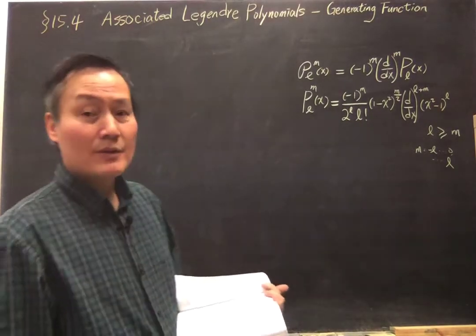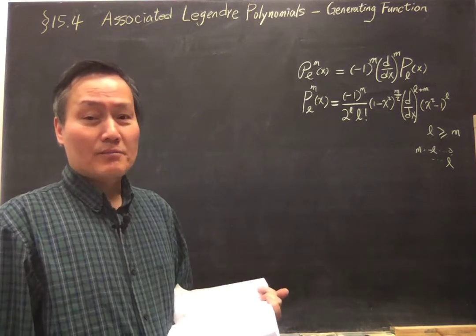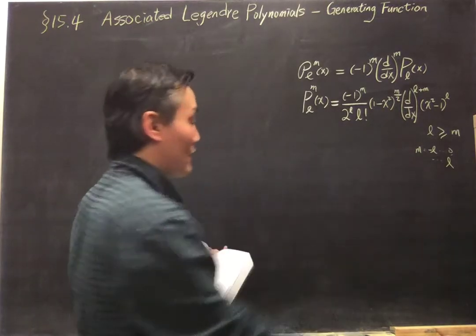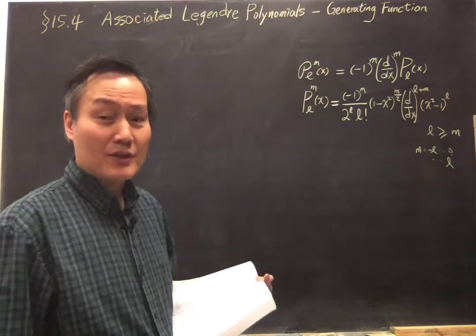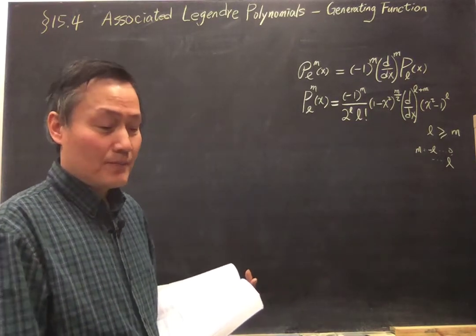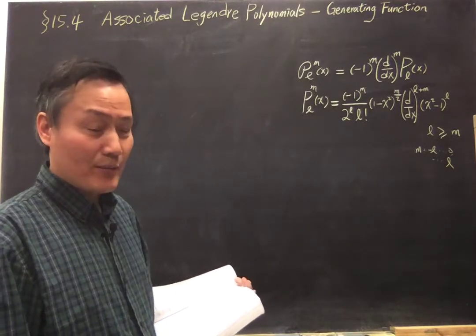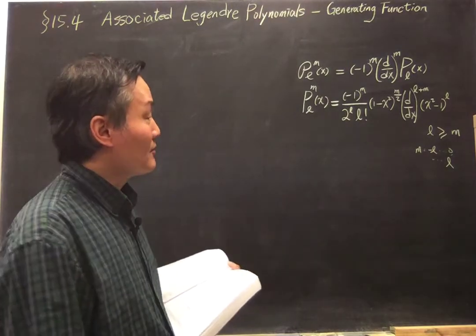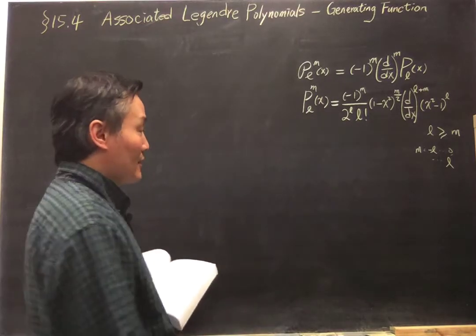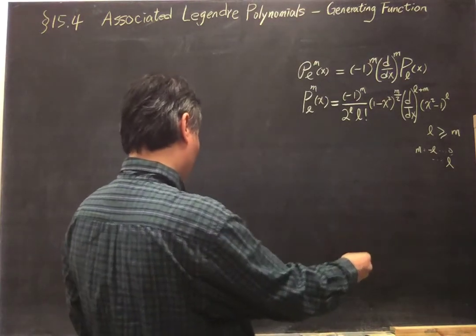One more thing: the functions for negative m and positive m, for the same |m|, are not linearly independent. From the original associated Legendre equation, the equation involves m squared, so for positive and negative m with the same |m|, both satisfy the same equation. So P_l^m and P_l^{-m} are related to each other by a constant, given in equation 15.41.